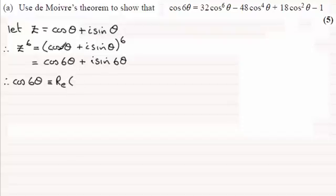Now instead of writing cos θ and sin θ I'm just going to write c and s. So it's (c + is)⁶.